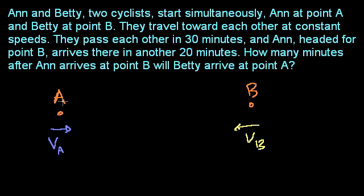They pass each other in 30 minutes. So they're going to pass each other someplace in between A and B. They're going to pass each other there. And what are these distances? It took them 30 minutes to both get to this point. They pass each other in 30 minutes, and Ann headed for point B arrives there in another 20 minutes.